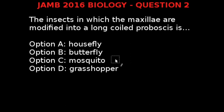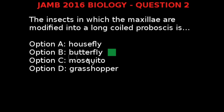The correct answer is Option B, Butterfly. Butterflies and moths have a hollow tube called a proboscis which they use to suck up nectar. Being long, it can go deep into a flower, and the insect sucks up nectar as if through a straw. The proboscis is usually coiled underneath the butterfly's head, and when the insect wants to feed, it is uncoiled and extended. Mosquitoes also use a proboscis, but theirs is not coiled, which is why the correct answer is Option B, Butterfly.